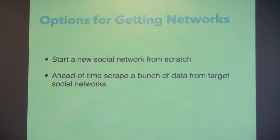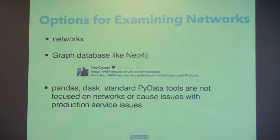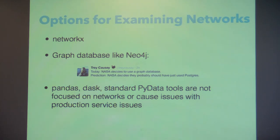Once you have this data, there are a couple of options for examining it. NetworkX gives you a lot of options for extracting important nodes in the network and important groups of nodes. But once the data gets very large — bigger than the memory of whatever machine you're working with — NetworkX doesn't work and it doesn't fail cleanly; it just falls over, which is unfortunate.